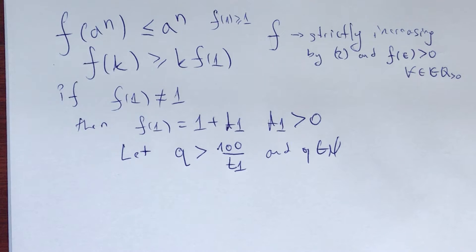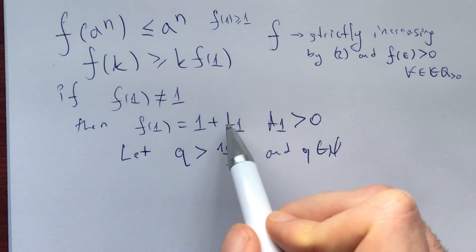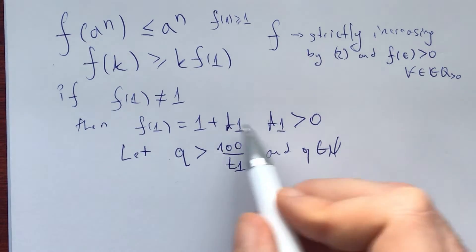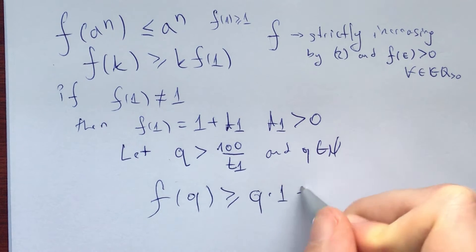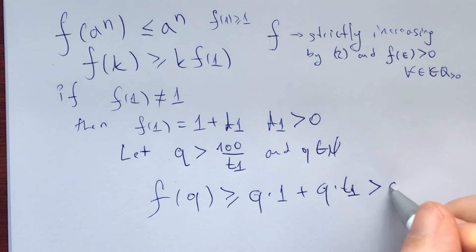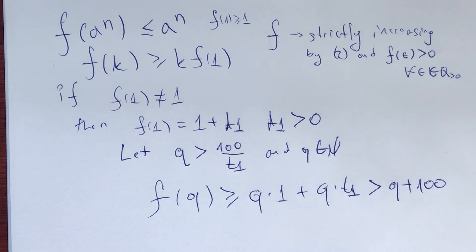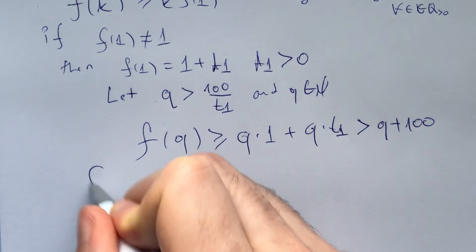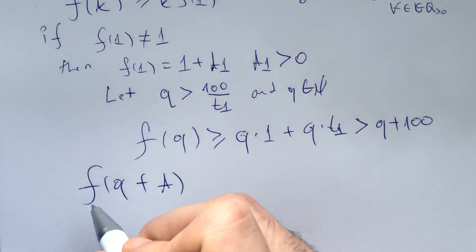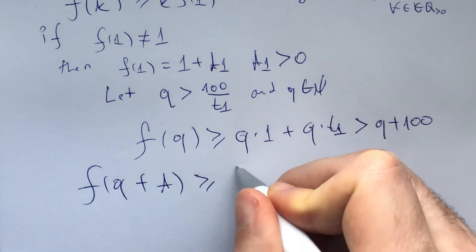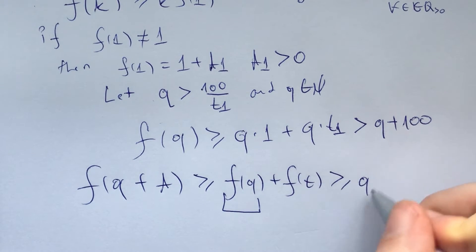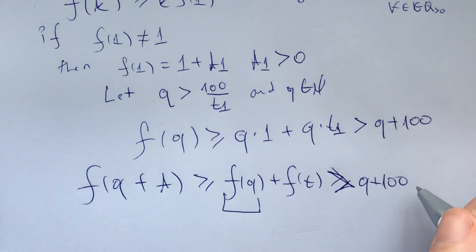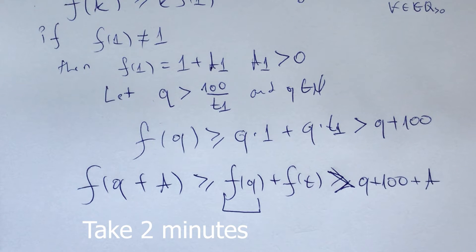Here is how to put the ideas together. Let f(1) = 1 + t₁. Choose q large enough so that f(q) ≥ q + q·t₁ > q + 100. Applying the second equation to q and some natural number t gives f(q + t) ≥ f(q) + f(t) > (q + 100) + t. Take two minutes to see if you can finish proving f(1) = 1.